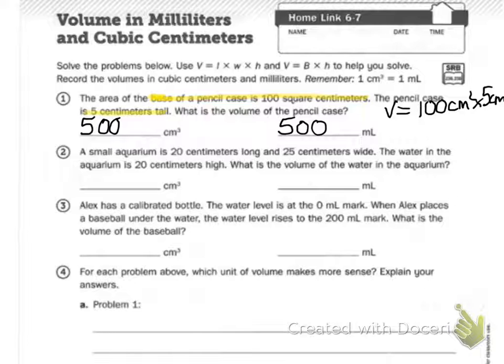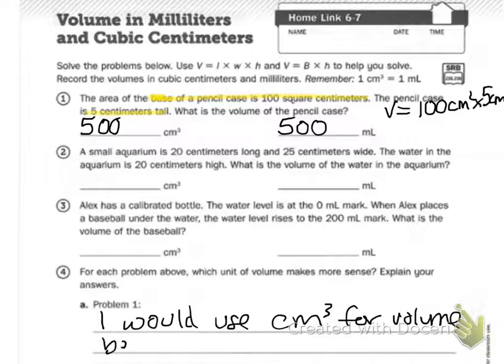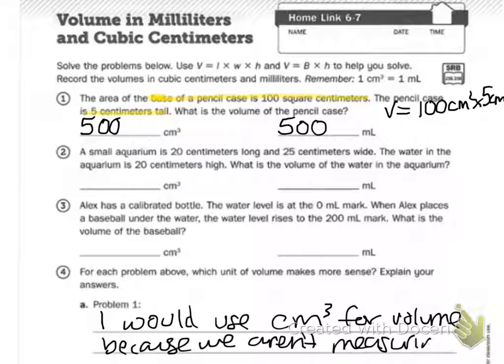So for number 1, I'm going to say that centimeters cubed makes more sense because the other two used water with milliliters, and I feel that makes more sense. Usually we use meter sticks and there's centimeters on our rulers that we use to measure length and volumes of stuff. Milliliters we use in science usually when we're measuring liquid. So for problem 1, I would use centimeters cubed for volume because we aren't measuring liquid.